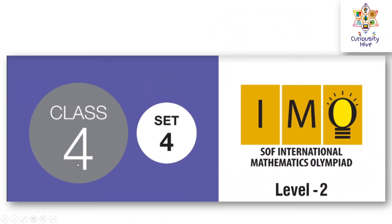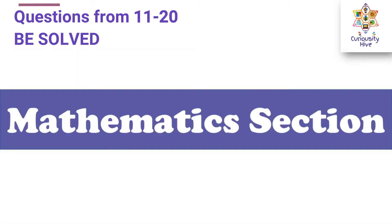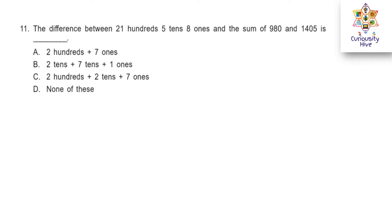Today we are going to solve the Class 4 IMO paper which is of Level 2 type. We are looking at Set 4 and this is a 2019 paper. The first section is the mathematics section. In the last video we solved the first 10 questions of this paper and now we take it on from the 11th question.